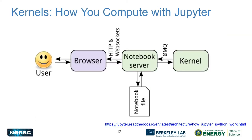If you use Jupyter, you may be aware that the way you actually run code is through a thing called a kernel. Your browser talks to the notebook server — for example running on Cori 19 or Cori 13 — and every tab you start up is another process called a kernel in Jupyter parlance, communicating via ZeroMQ. How you configure this kernel basically tells you what you can do — it's a Python process, Julia process, or R process that you send commands to and it sends output back.